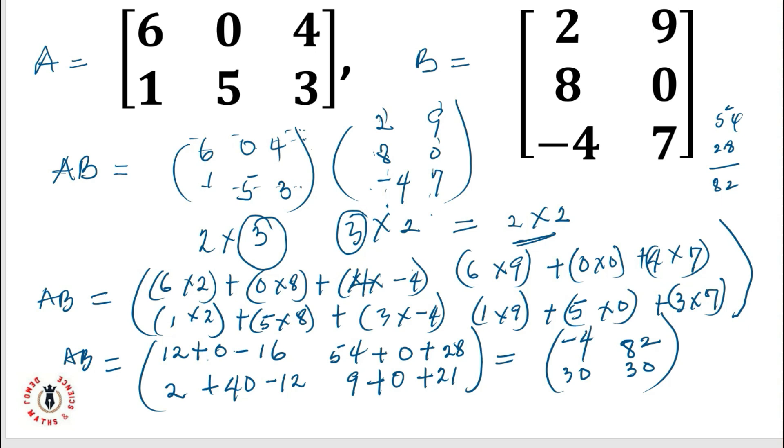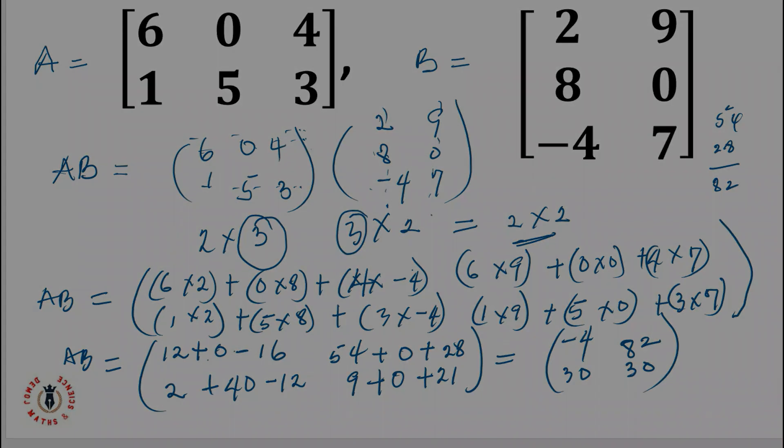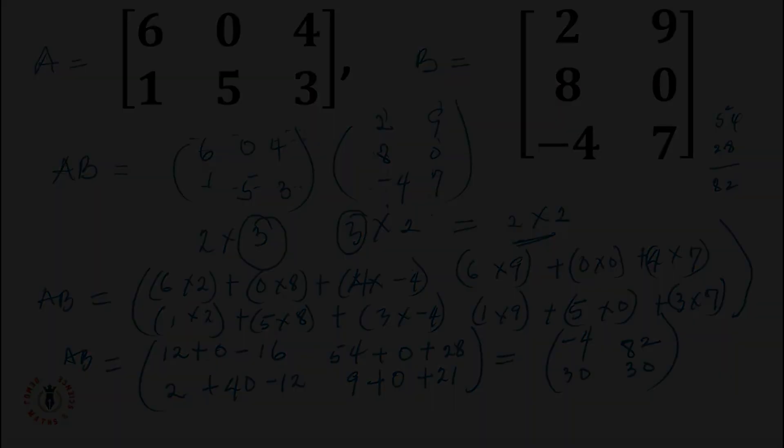So my A·B matrix result is: minus 4, 82, 30, 30.